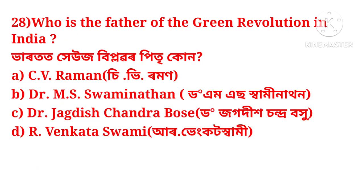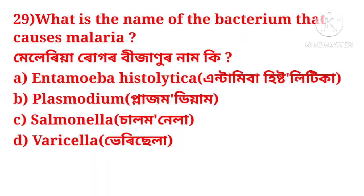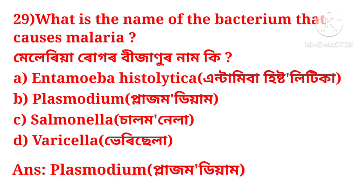Who is the father of the Green Revolution in India? The next question is: what is the name of the organism that causes malaria? The options are: Entamoeba histolytica, Plasmodium, Salmonella, or Brucella. The correct answer is Plasmodium.